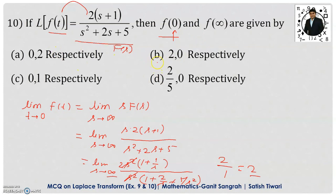Looking at option B, we have f(0) = 2, so option B is correct. For f(∞) using the final value theorem, we take the limit as t → ∞, which corresponds to s → 0. Putting s = 0, the numerator becomes 0 and the denominator becomes 5, so the answer is 0. Therefore option B is the correct option.